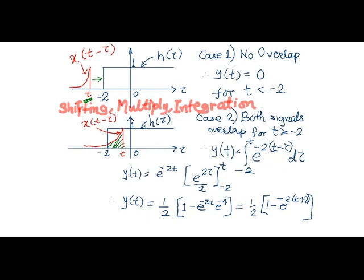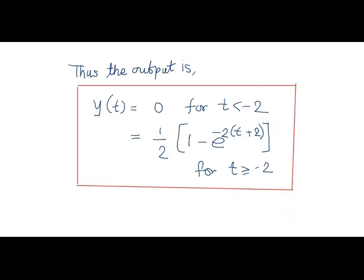Thus the final output of convolution integral for the given signals is: output is 0 for t less than minus 2, and output is 1 half times 1 minus e raised to minus 2 times t plus 2, for t greater than and equal to minus 2.